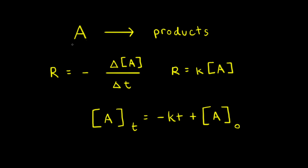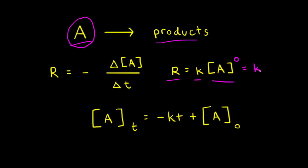Let's say we have a hypothetical reaction where reactant A turns into products, and the reaction is zero order with respect to A. If it's zero order with respect to A, we can write that the rate of the reaction is equal to the rate constant K times the concentration of A to the zero power. Since any number to the zero power is equal to one, the rate of the reaction is just equal to the rate constant K.